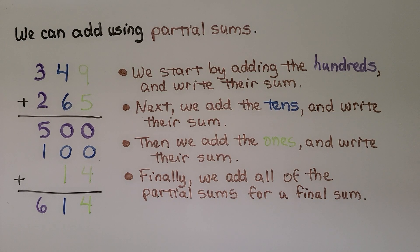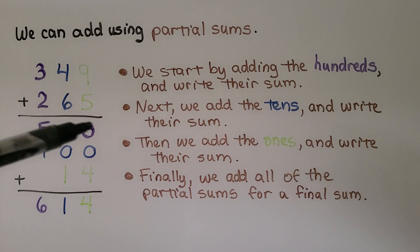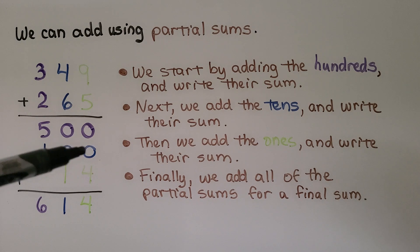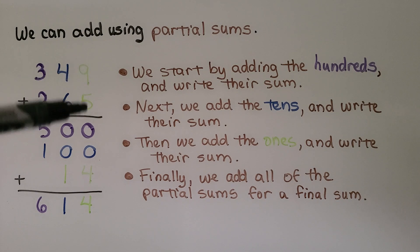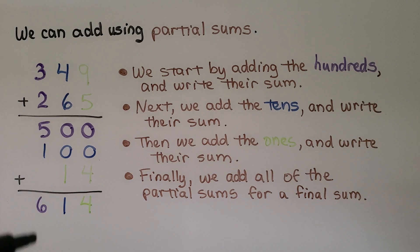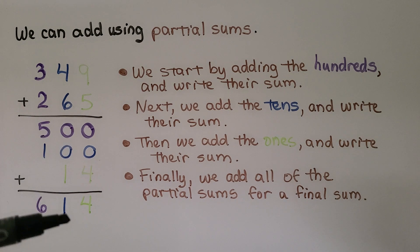We can add using partial sums. To add 349 plus 265, we start by adding the hundreds and write their sum in the correct place value. Next we add the tens: 4 tens and 6 tens is 10 tens, that's 100. We write that in the correct place value. Then we add the ones: 9 ones and 5 ones is 14 ones. We write 14 in the correct place values. Then we just add — we have 614. These are the partial sums that combine for the final sum.